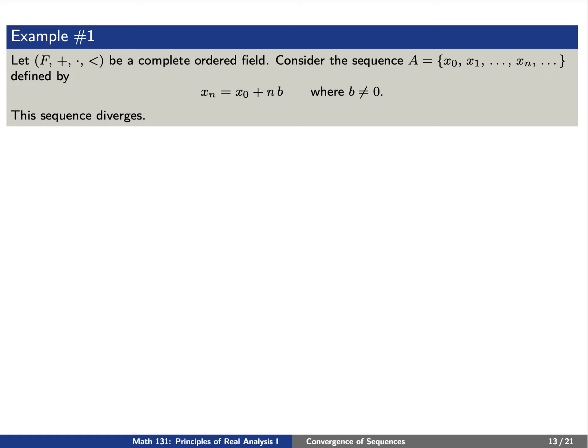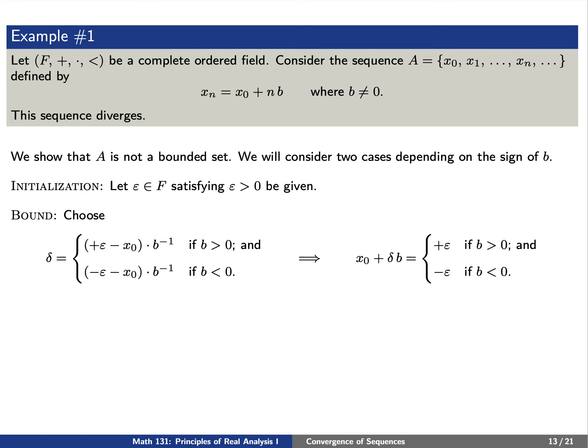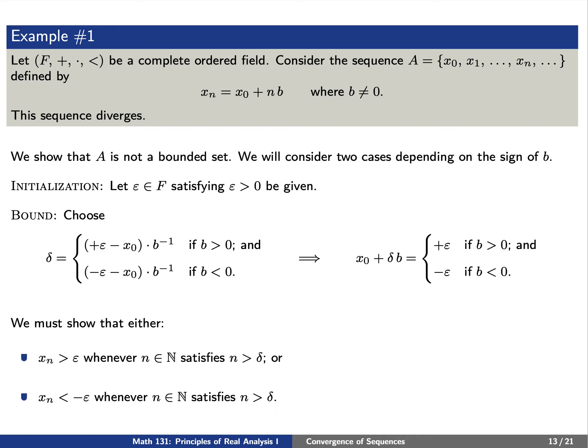Let's go over some examples. For a complete ordered field, consider a sequence defined by x sub n equals x zero plus n times b, where b is a non-zero element. We claim this sequence diverges. We'll show A is not a bounded set by considering two cases based on the sign of b. Given any positive epsilon, choose delta such that x zero plus delta·b equals positive epsilon if b > 0, or equals negative epsilon if b < 0. We'll show either x_n > epsilon or x_n < −epsilon for n > delta, depending on the sign of b.